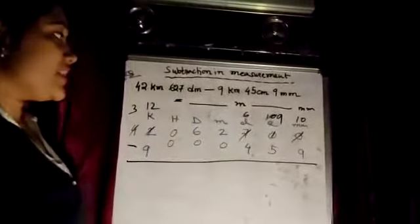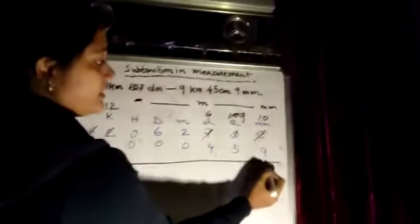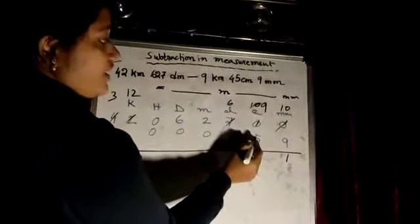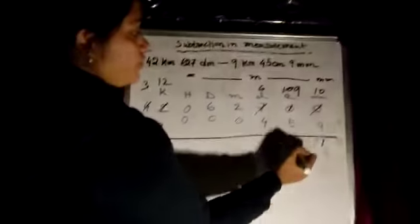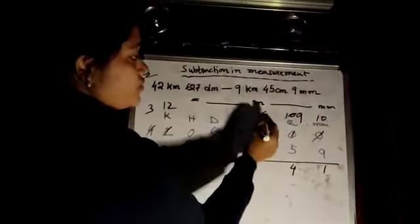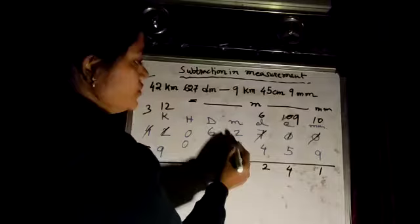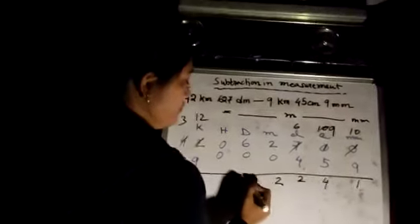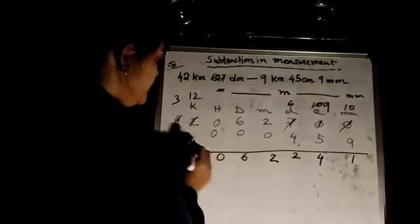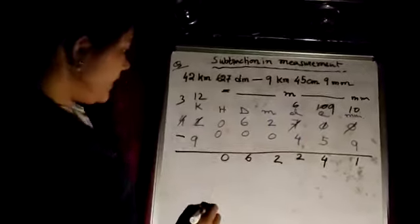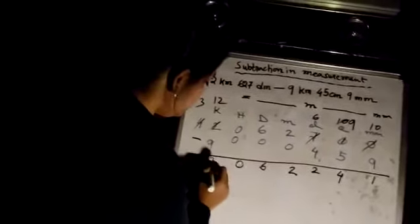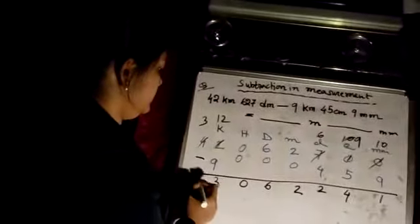Let us do the subtraction. 9 to 10: 1. 5 to 9: 4. 4 to 6: 2. Then 2, 6, 0. 9 to 12: 3. Then 3, 10.